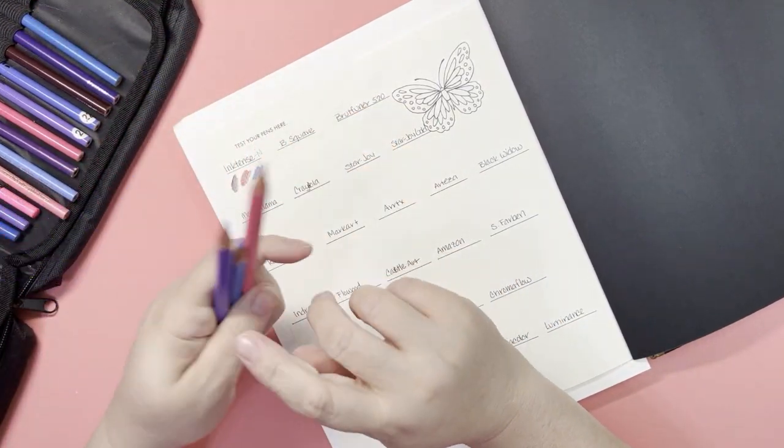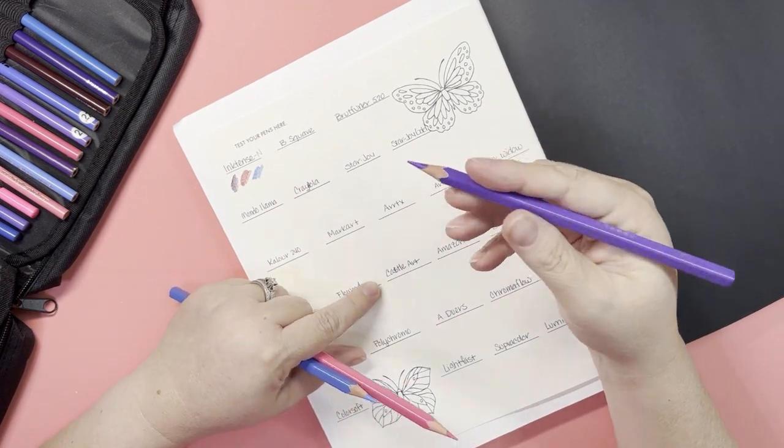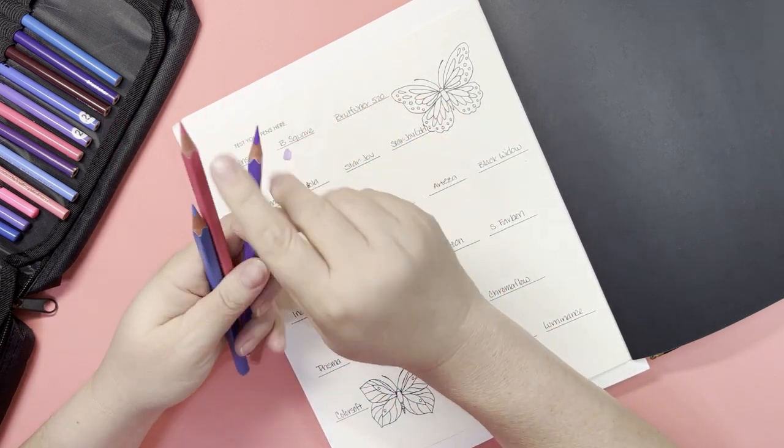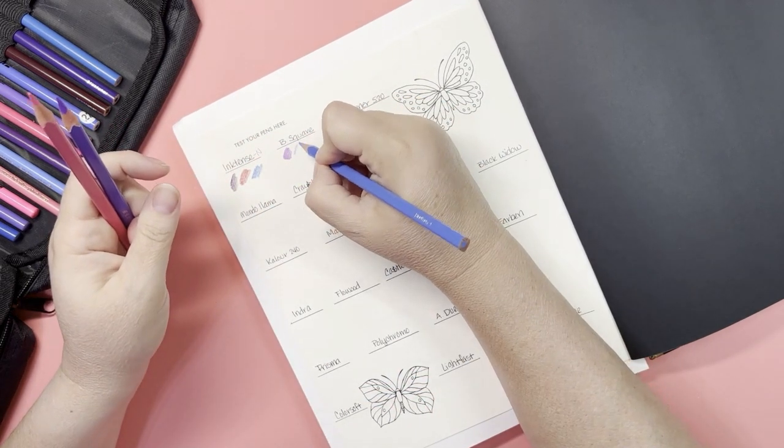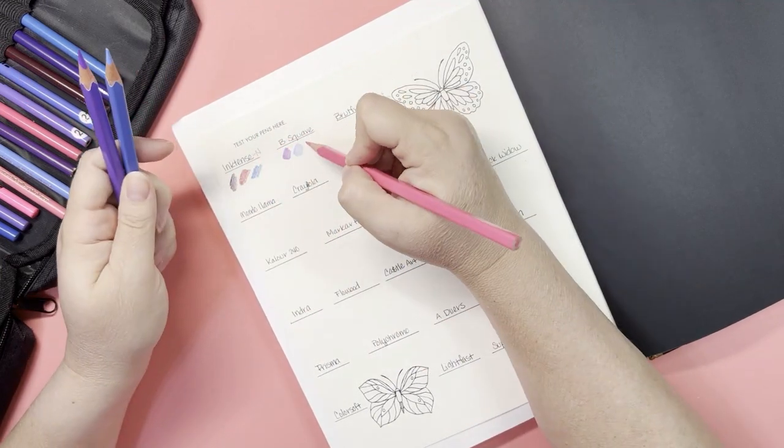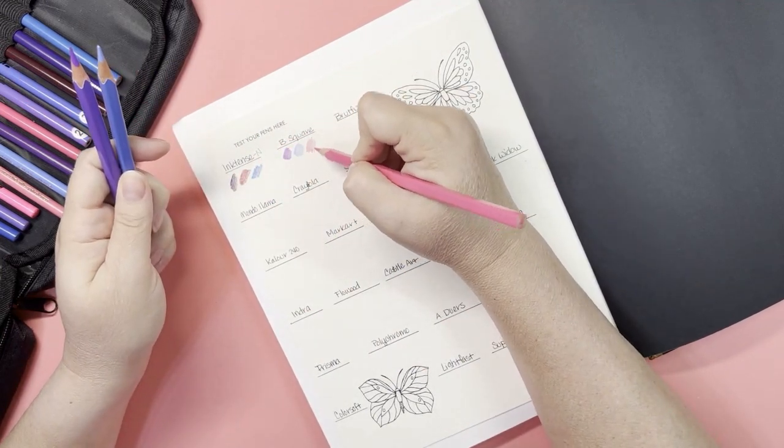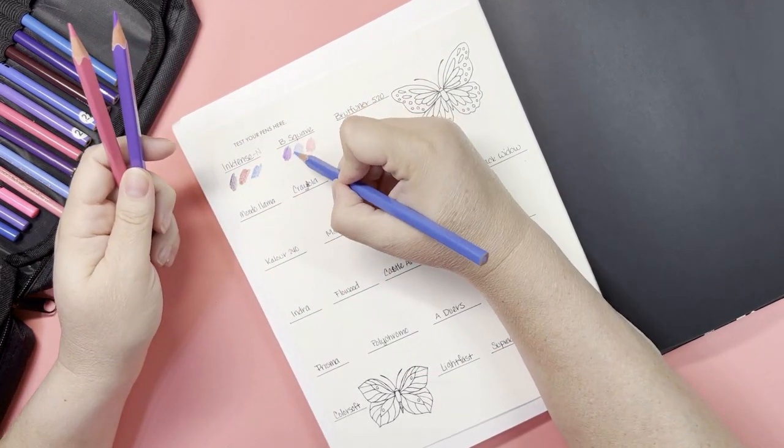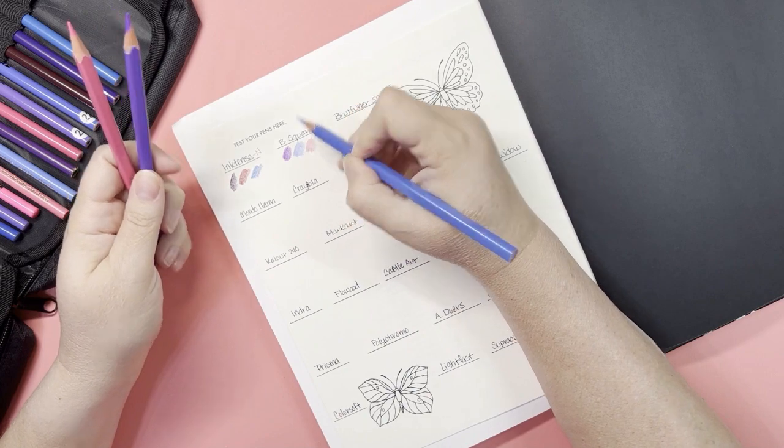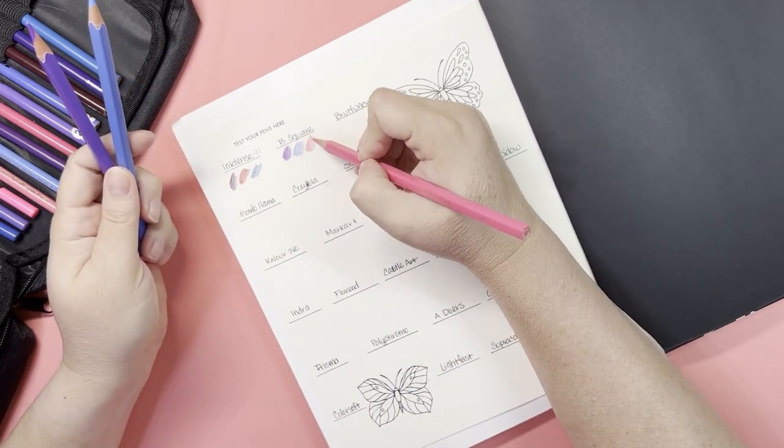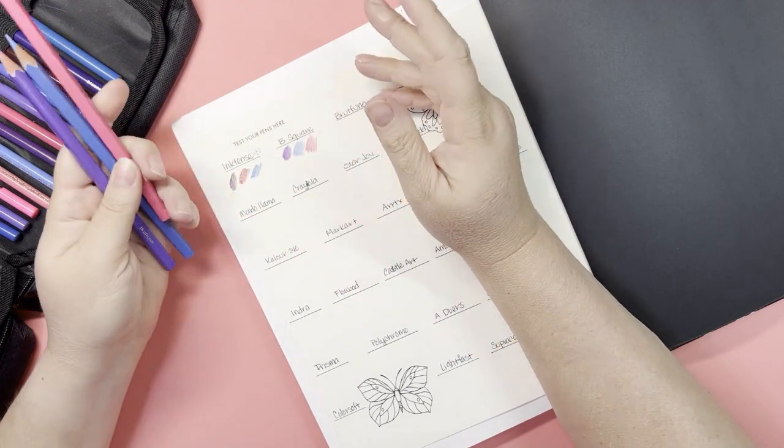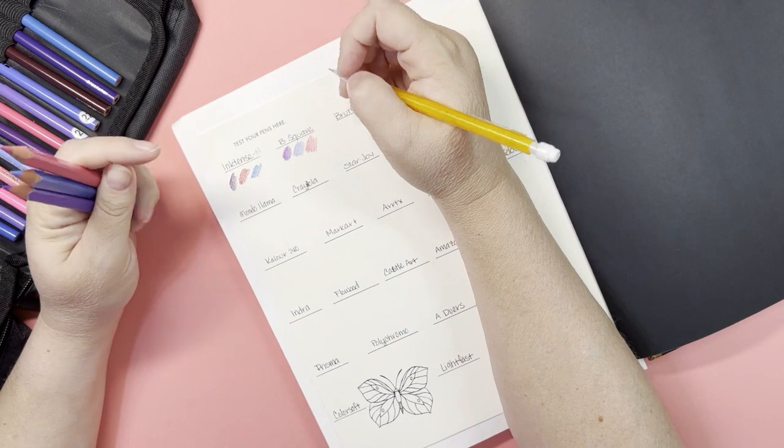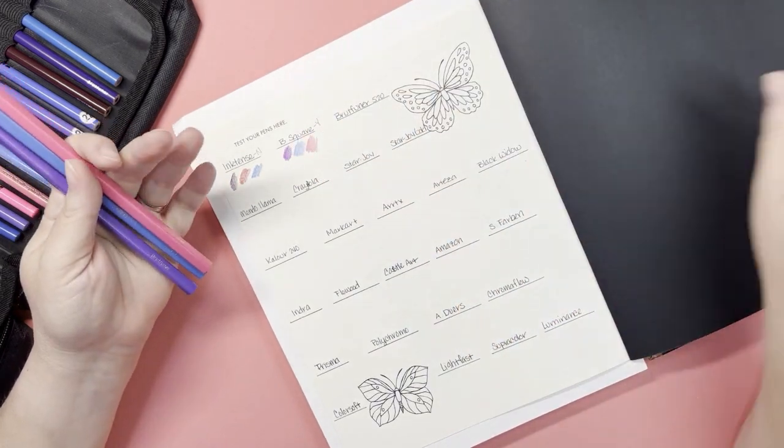Let me know in the comments below if you guys want me to continue to test the Inktense or if you guys use them dry ever. These are the Brutfruner squares. That one felt scratchy, purple one feels really good, the blue one... I mean they don't feel horrible.